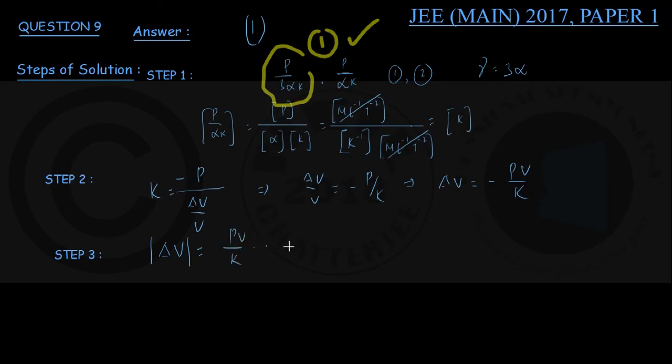I'm calling it equation number 1. Understand it once again: under a pressure of P, the volume changes by minus PV by K, and to balance that, temperature should be raised such that by heating, the change in volume should be a positive value of the same magnitude—that is, delta V modulus equals PV upon K.